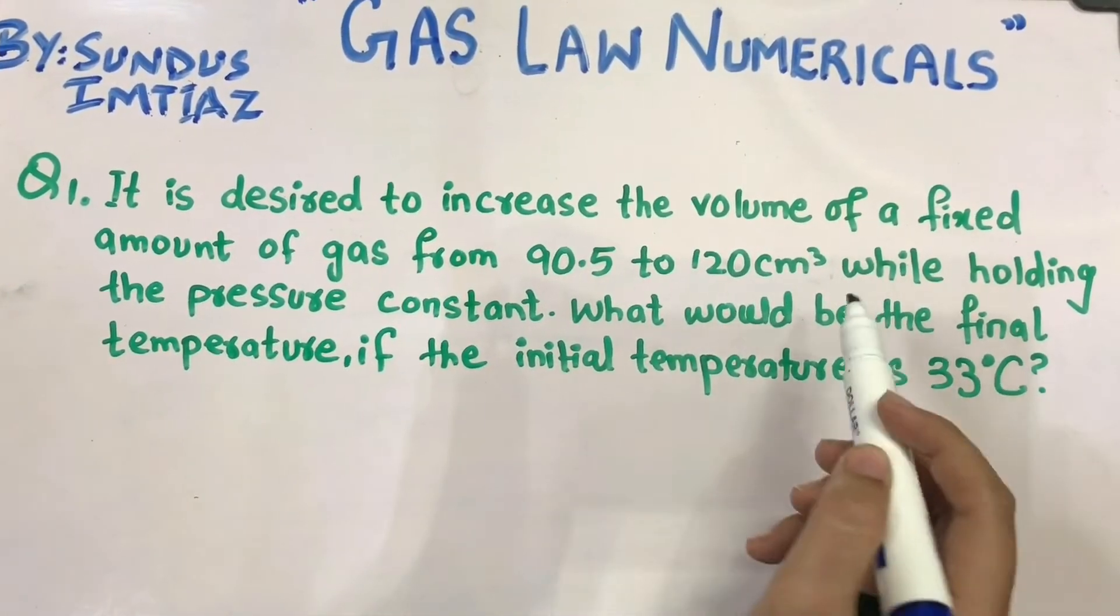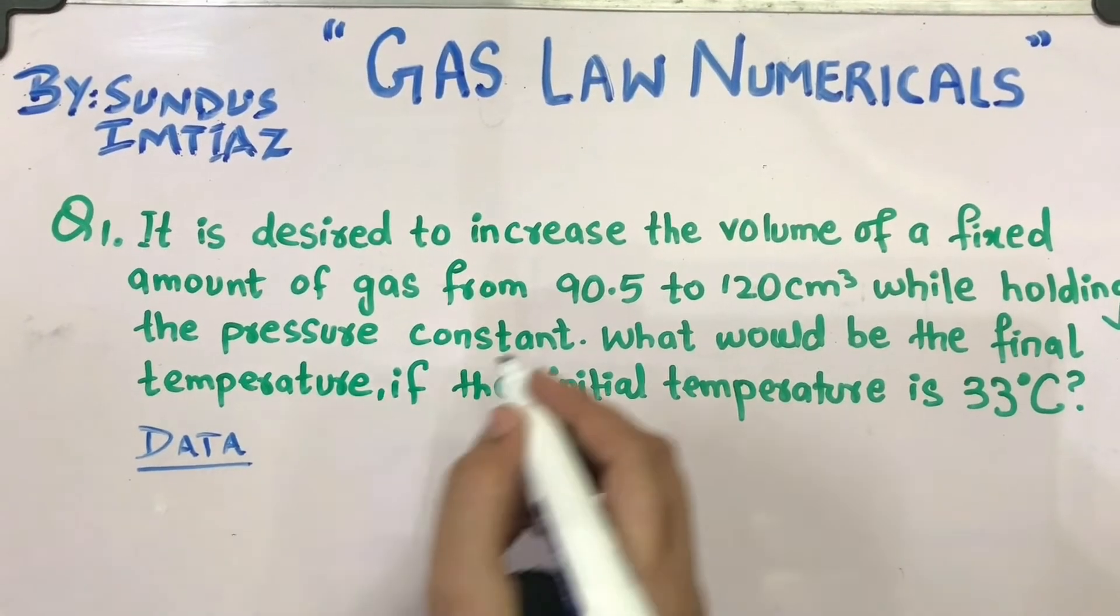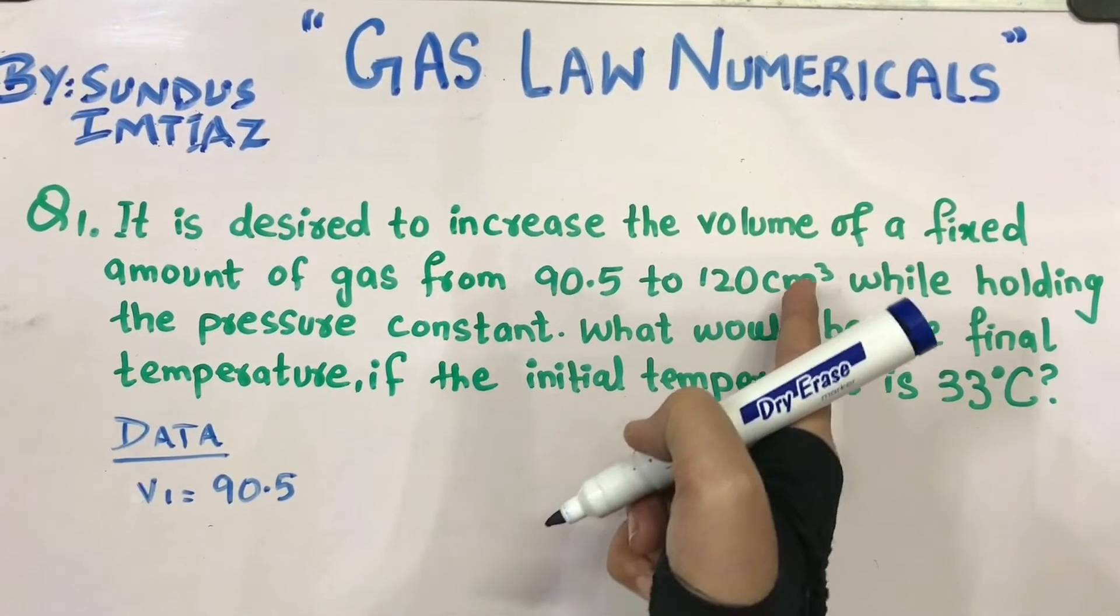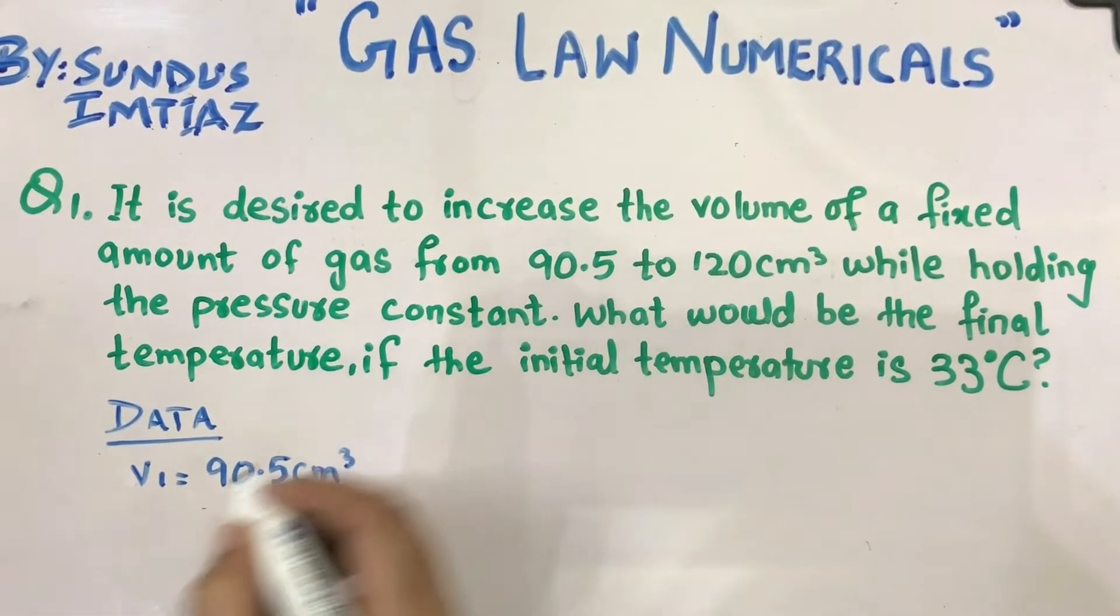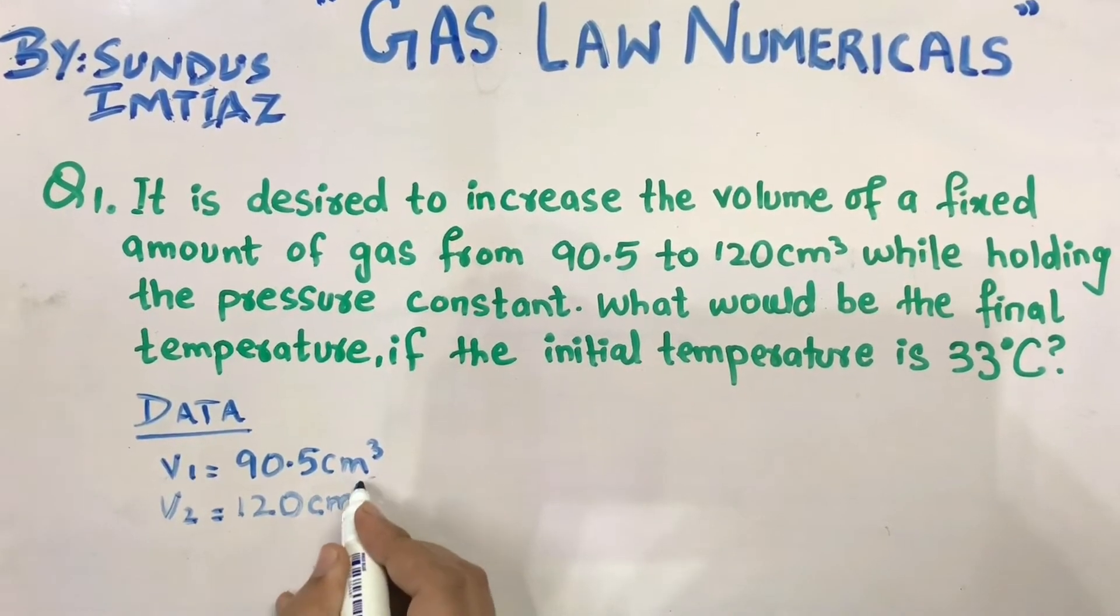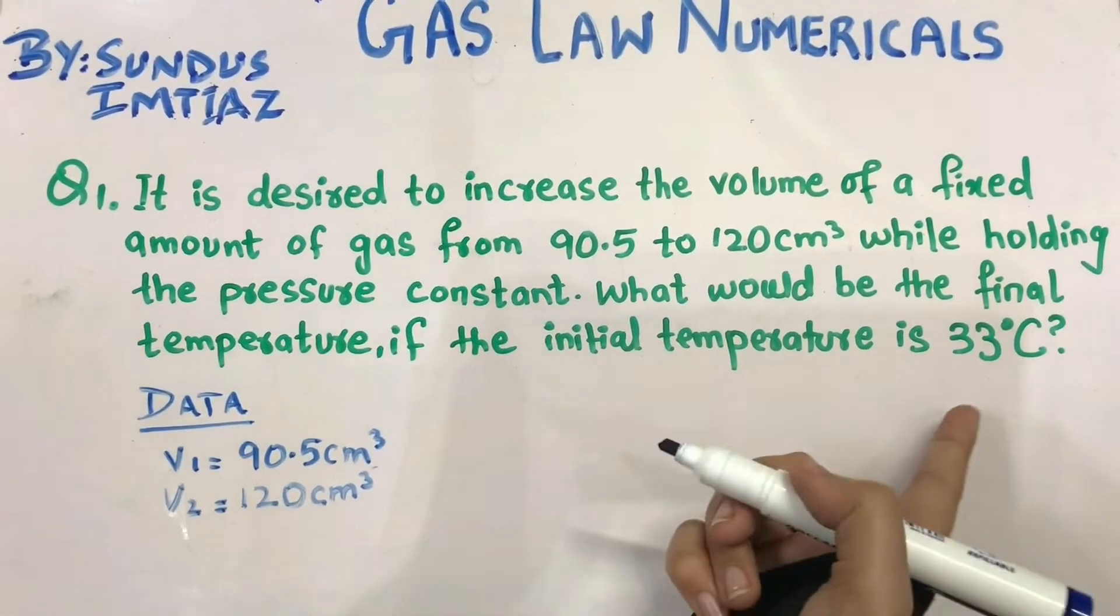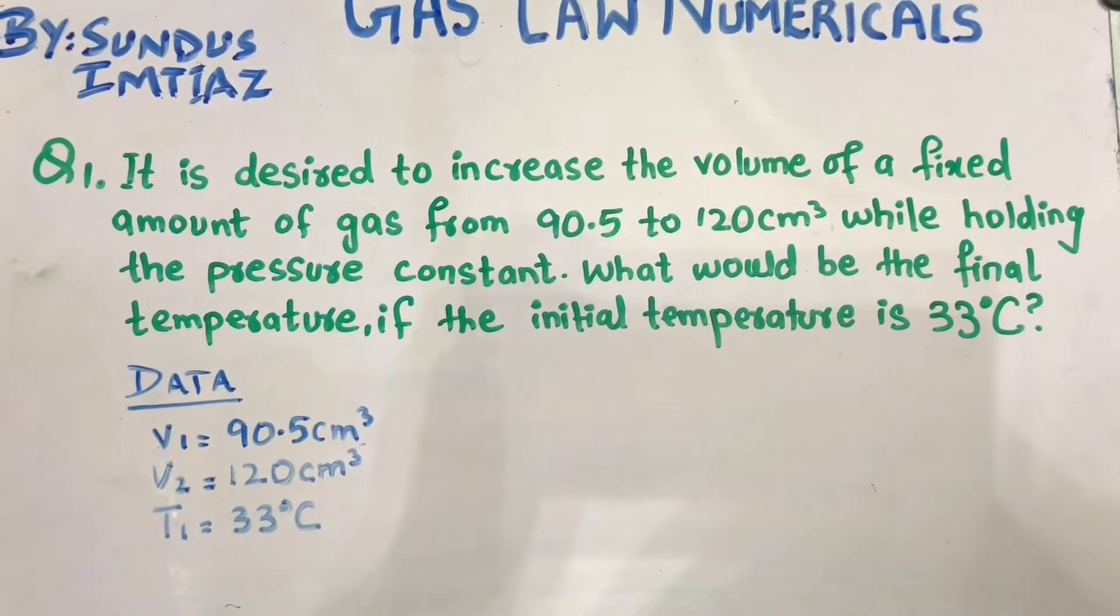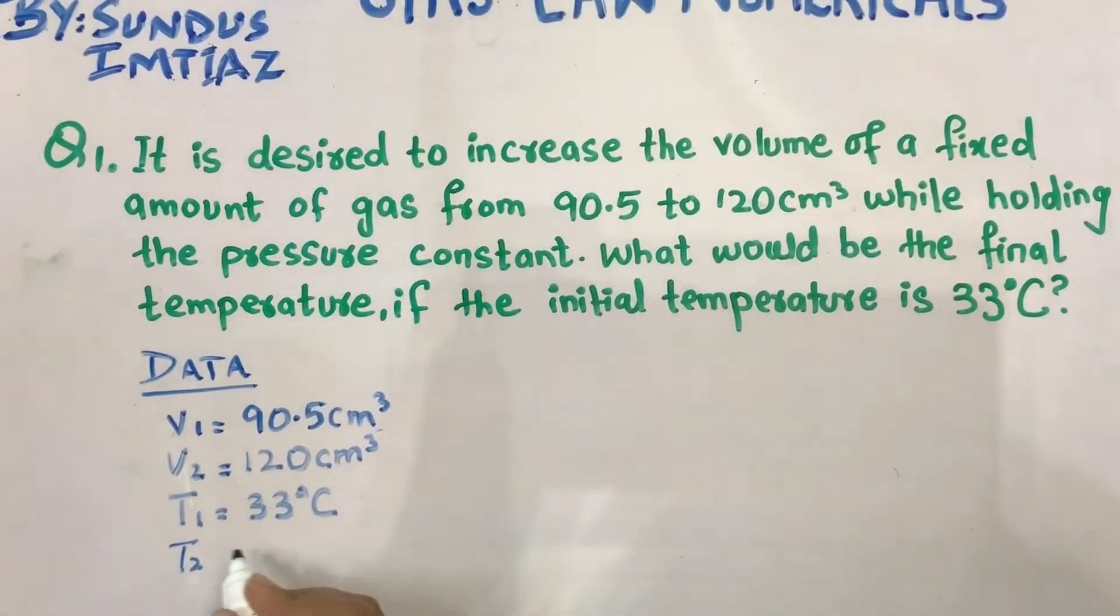The volume is given as 90.5 cm³, so V1 equals 90.5 cm³. V2 is 120 cm³. The third data given is 33 degree centigrade, which is our initial temperature, so T1 is 33°C. What you have to find is the final temperature, so T2 is the required data.